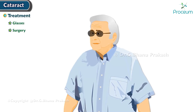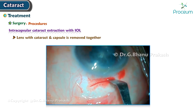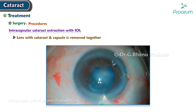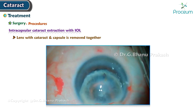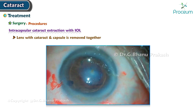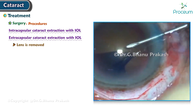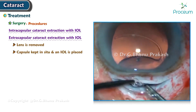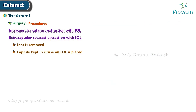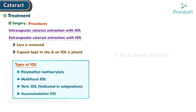Treatment options include glasses and surgery, indicated with increasing severity of visual handicap. Surgical procedures include intracapsular cataract extraction (ICCE) with intraocular lens and extracapsular cataract extraction (ECCE), where the capsule is kept in situ and an intraocular lens is placed. Types of intraocular lenses include polymethyl methacrylate (PMMA), multifocal intraocular lens, toric intraocular lens (indicated in astigmatism), and accommodative intraocular lens.